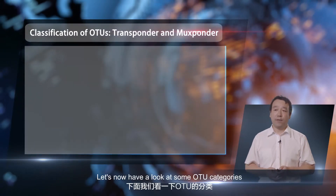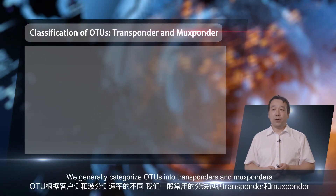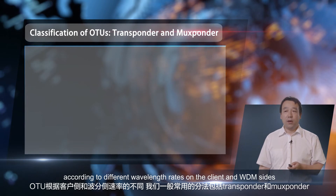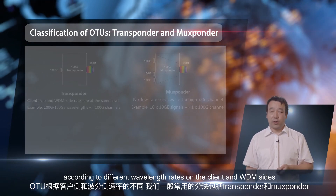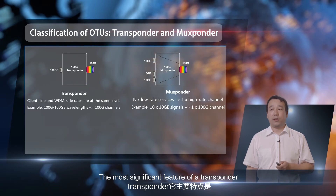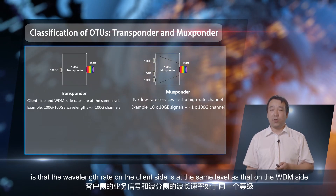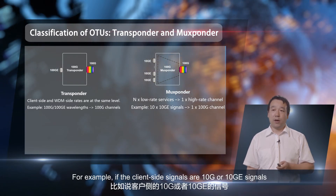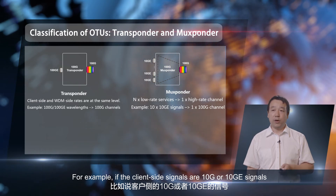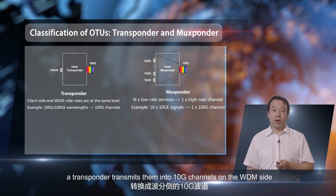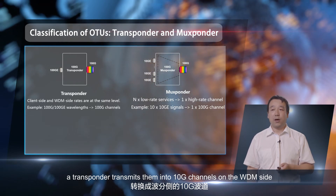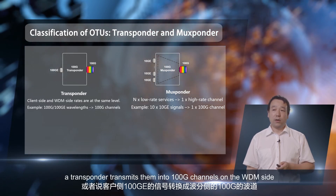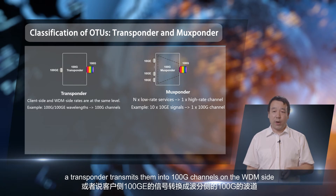Let's now have a look at some OTU categories. We generally categorize OTUs into transponders and muxponders according to different wavelength rates on the client and WDM sides. The most significant feature of a transponder is that the wavelength rate on the client side is at the same level as that on the WDM side. For example, if the client-side signals are 10G or 10GE signals, a transponder transmits them into 10G channels on the WDM side. If the client-side signals are 100GE signals, a transponder transmits them into 100G channels on the WDM side.